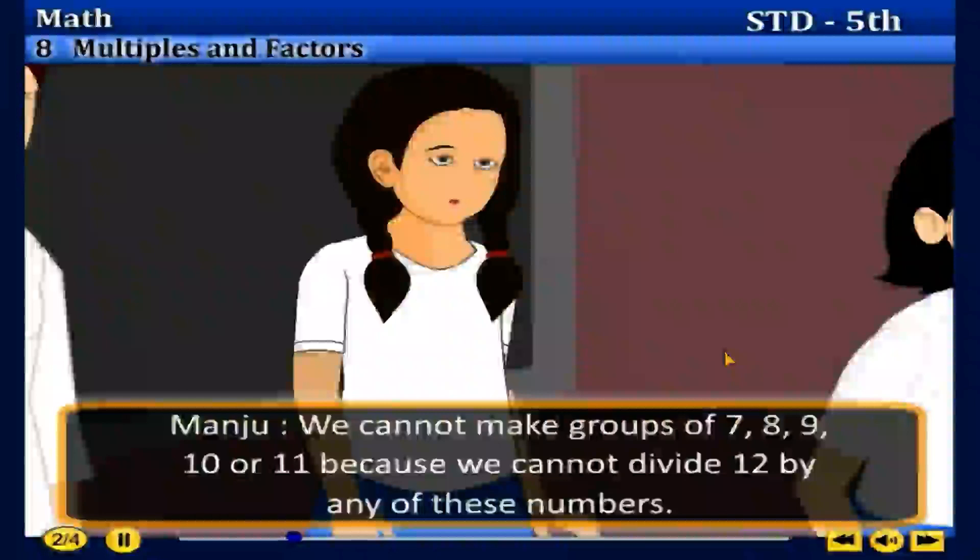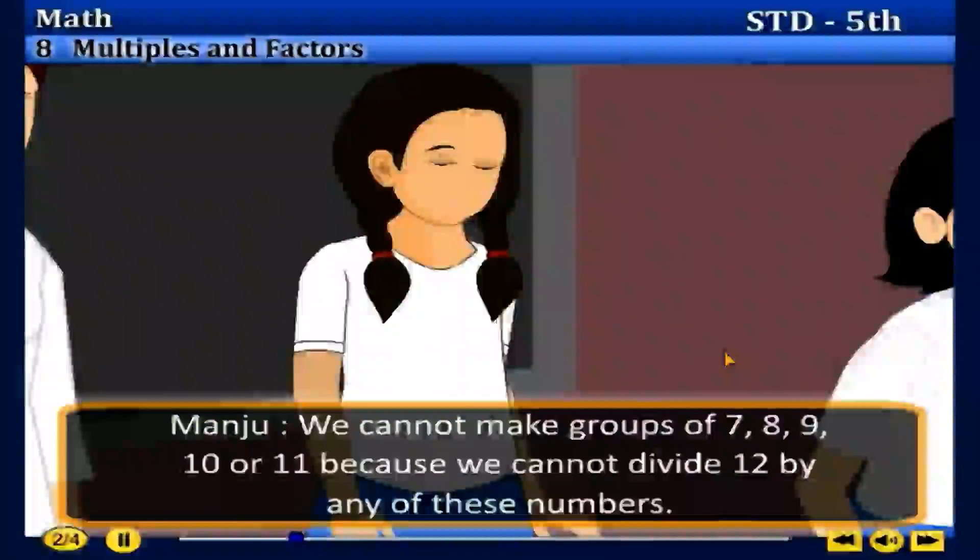Anju: We can divide 12 by 6, so groups of 6 can be made. Manju: We cannot make groups of 7, 8, 9, 10, or 11 because we cannot divide 12 by any of these numbers. Sanju: We could make one group of 12 and give it to one person, or we could give 12 people 1 pera each.